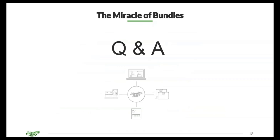Next question: if I have a separate stock level for my bundle than the component items, how do I set that up? That would actually be viewed as a kit within our system and would need to be its own product with its own SKU. Anything that's pre-packaged and you can just go out and grab one of is going to be viewed as an individual item, so you'll want to leave it set as an individual item within ShippingEasy.